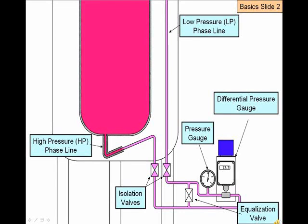The equalization valve, when open, creates a bypass between the HP line and LP line, resulting in no differential condition. This can be used to check the zero of the differential gauge.